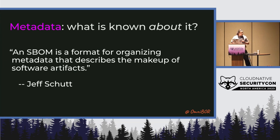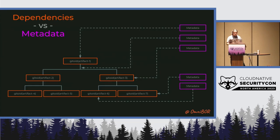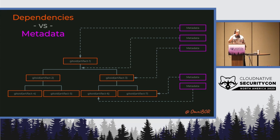This brings us to the question of metadata — what is known about it? There was a great comment from Jeff, another Omnibore community member: an SBOM is a format for organizing metadata that describes the makeup of software artifacts. So Omnibore is specifically about the identity of things — it's not about how you store the metadata. We have the dependencies in the Omnibore graph, and then the metadata sits to the side. A good example of metadata: the license of a project, who compiled it, what your image scanner said about something.